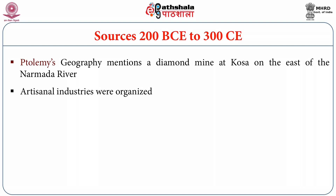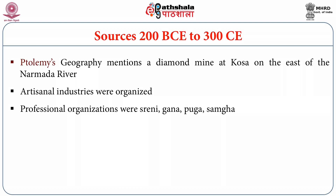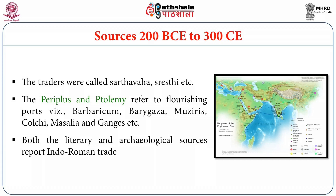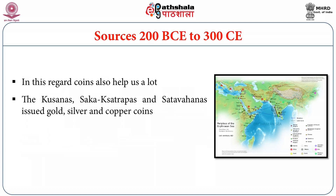The Buddhist texts Mahavastu Avadana and Milindapanha mention artisanal activities. Donating inscriptions from Sanchi, Bharhut, Karla, Bhaja, Pitalkhora, and Amaravati support this. The Periplus Maris Erythraei refers to textile industries at Tagara and Pratisthanapur. Ptolemy's Geography mentions a diamond mine at Kosha on the east of the Narmada river. Artisanal industries were organized into professional organizations — Sreni, Gana, Puga, and Sangha. The traders were called Sarthavaha, Shreshthi, etc. The Periplus and Ptolemy refer to flourishing ports like Barbaricum, Barygaza, Muzuris, Kolchi, Masalia, and Ganges. Both literary and archaeological sources report Indo-Roman trade.